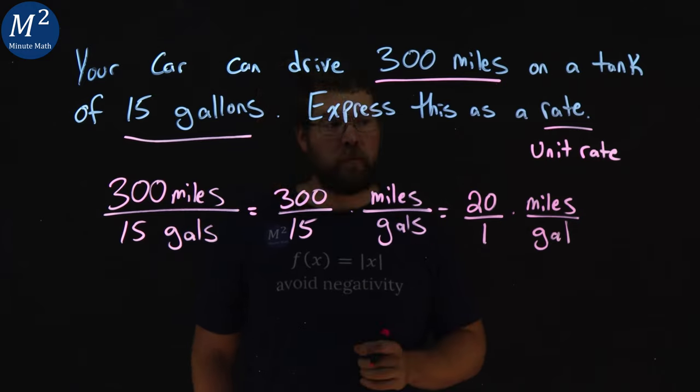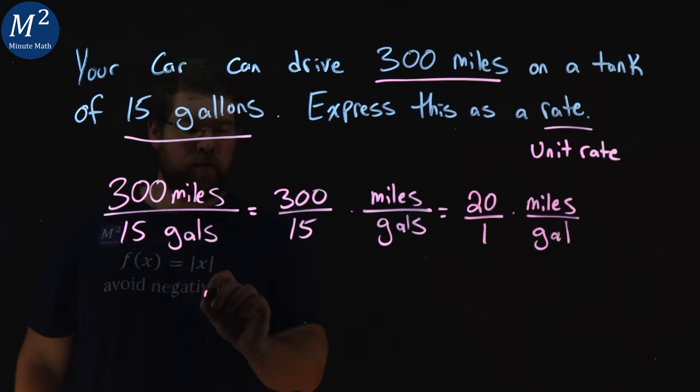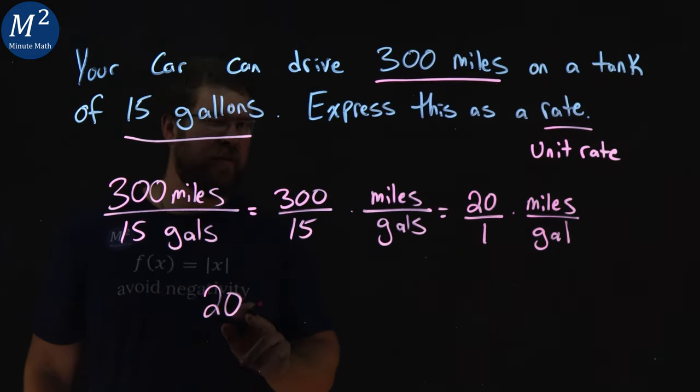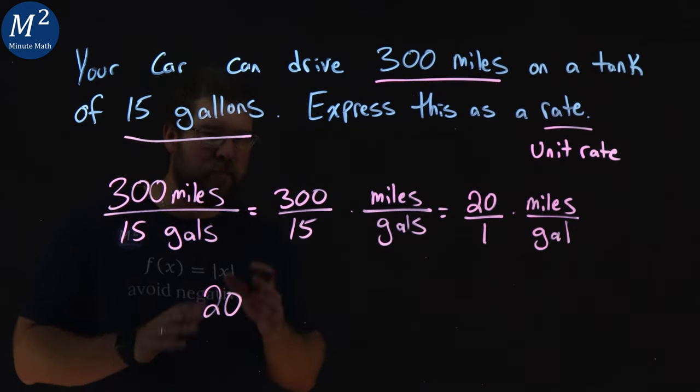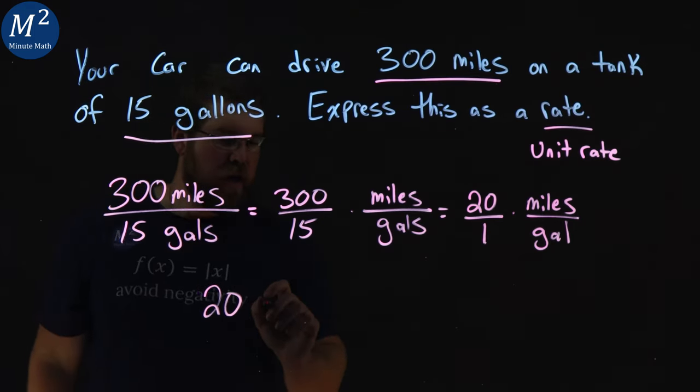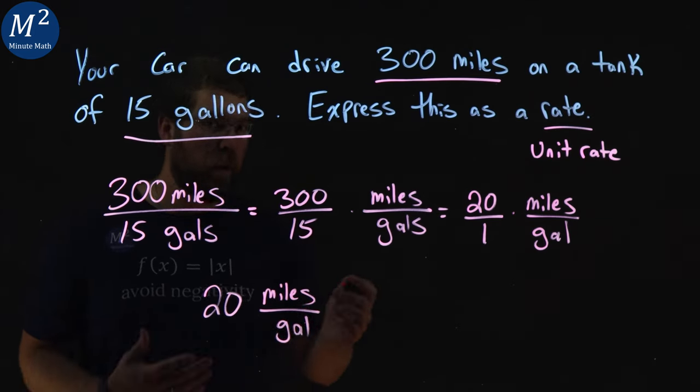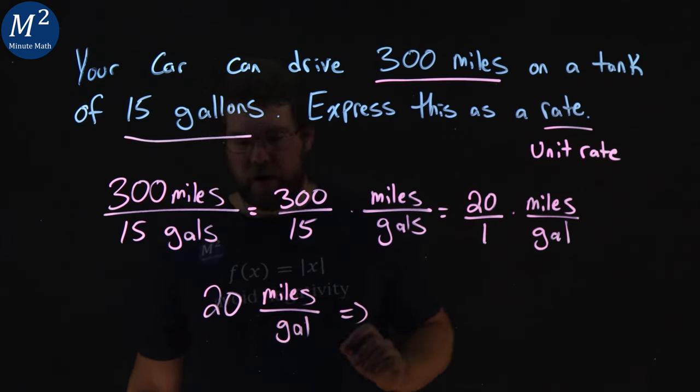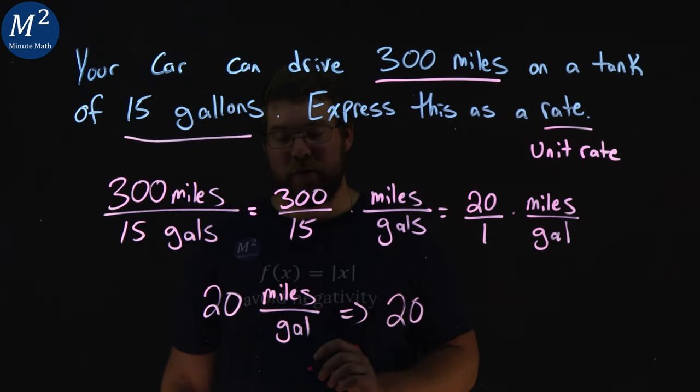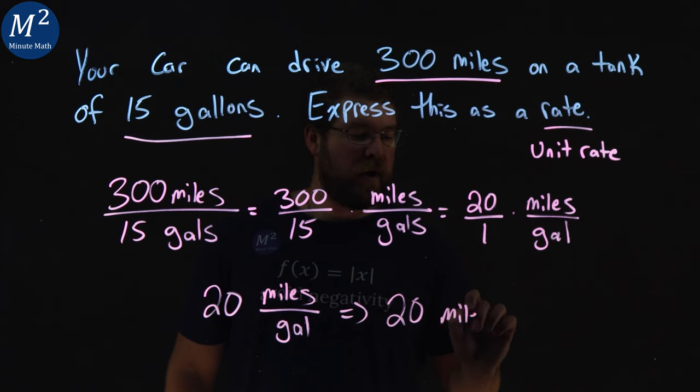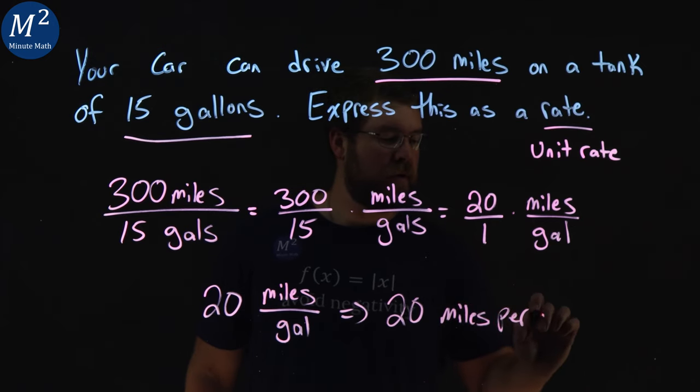We now have a unit rate. So, to write it out, we would say we have 20. We don't need to write over one because when it's over one, you don't need to divide, show that. Now, 20 miles over one gallon, or you can write it as this, which is more commonly used, 20 miles per gallon.